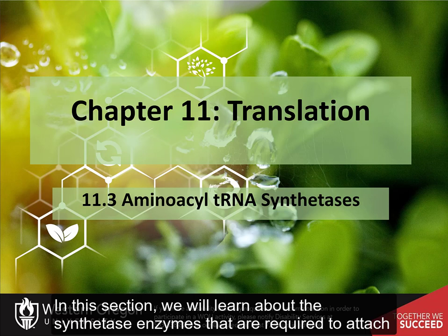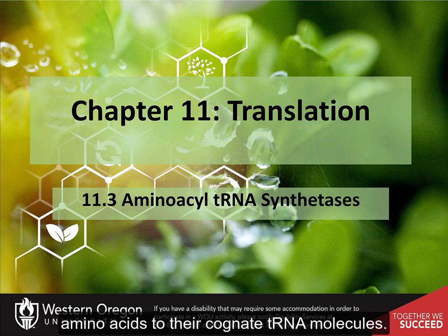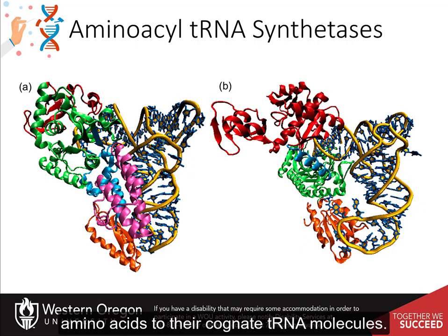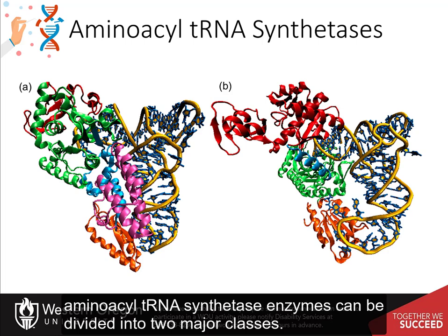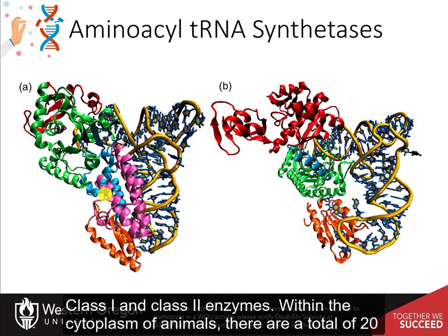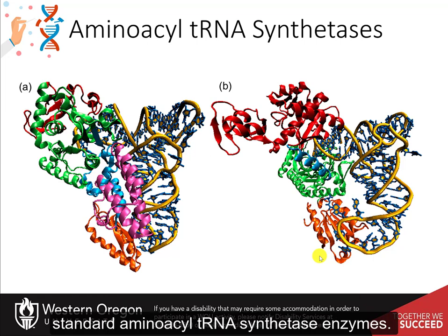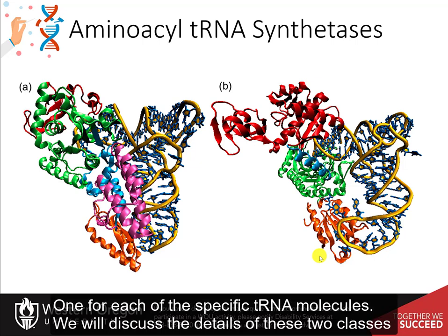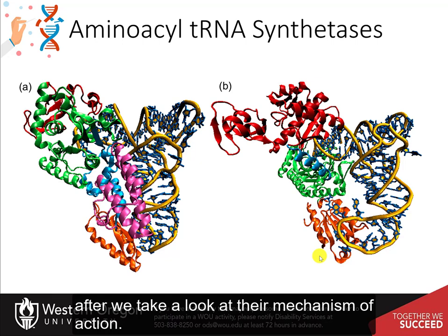In this section, we will learn about the synthetase enzymes that are required to attach amino acids to their cognate transfer RNA molecules. Aminoacyl-tRNA synthetase enzymes can be divided into two major classes: class I and class II enzymes. Within the cytoplasm of animals, there are a total of 20 standard aminoacyl-tRNA synthetase enzymes — one for each of the specific tRNA molecules. We will discuss the details of these two classes after we take a look at their mechanism of action.